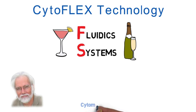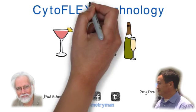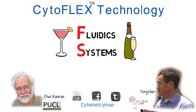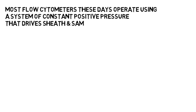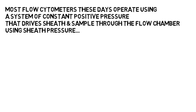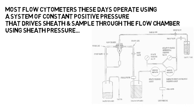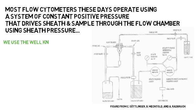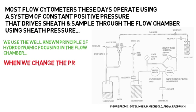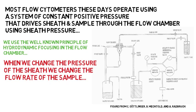In this tutorial, we're going to talk about fluidic systems and understand the differences between the Cytoflex and other instruments. Most flow cytometers these days operate using a system of constant positive pressure that drives the sheath and sample fluid through the flow chamber, using the well-known principle of hydrodynamic focusing. When we change the pressure of the sheath, we change the flow rate of the sample.